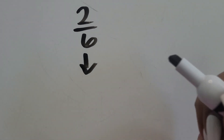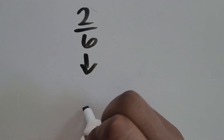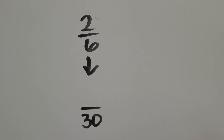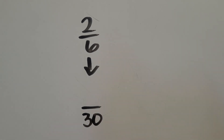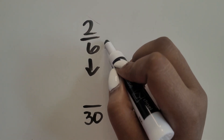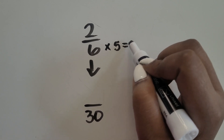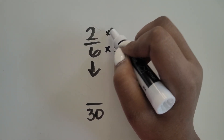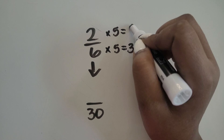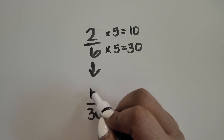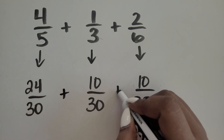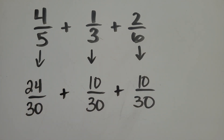Last, let's work on 2 sixths. How many groups of 6 equals 30? 5. 5 groups of 6 equals 30, or 5 times 6 equals 30. Let's do the same for the numerator: 5 groups of 2 equals 10, or 5 times 2 equals 10.